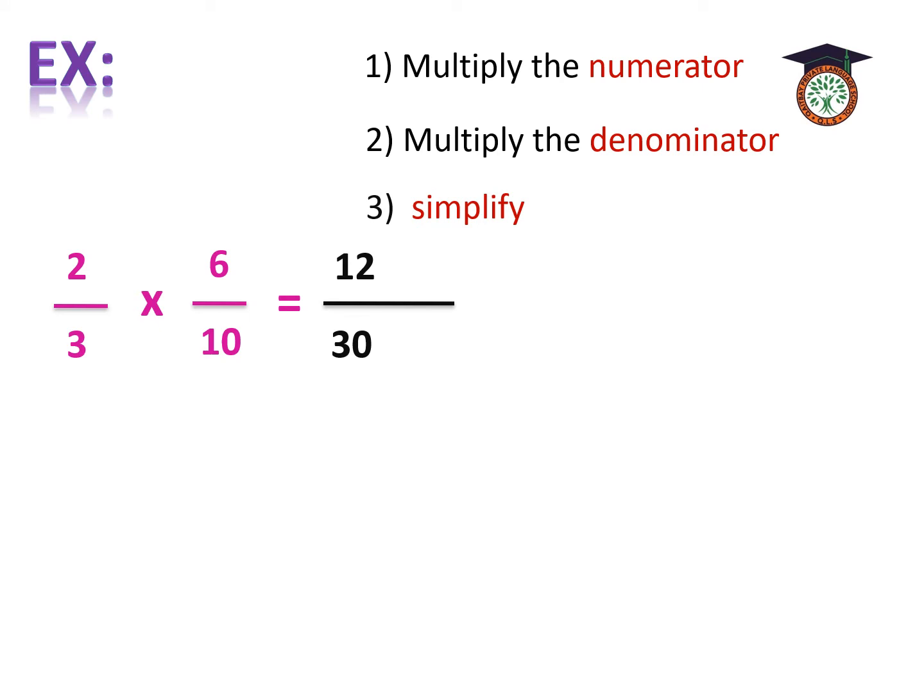Don't leave the fraction as it is. We are going to know 12 and 30 are from table 6. So, we are going to simplify by dividing both numbers by 6. So, the answer will be 2 over 5. And this is the simplest form.